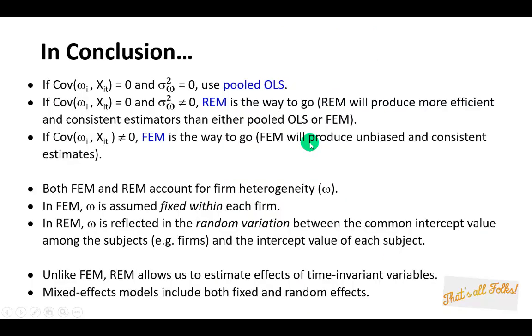In conclusion, if the covariance between the cross-section random error term omega and one or more of the regressors is zero, and given that there is zero correlation, pooled OLS should be quite okay. However, if there's evidence of zero correlation and given that this covariance is zero, then the random effects model is the way to go.